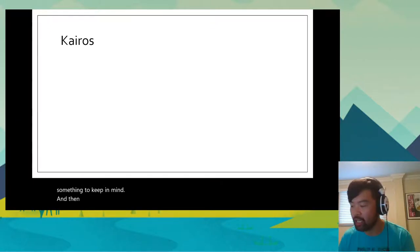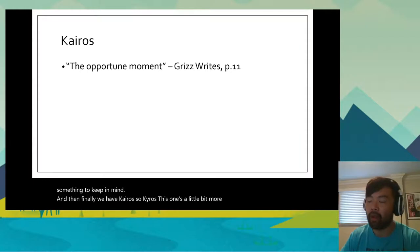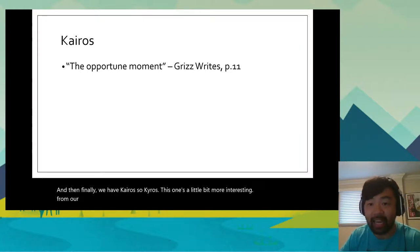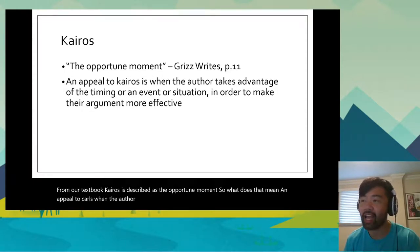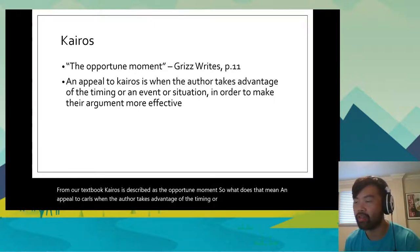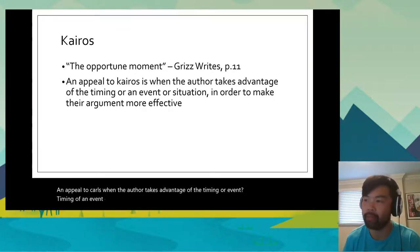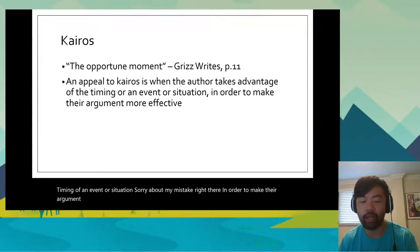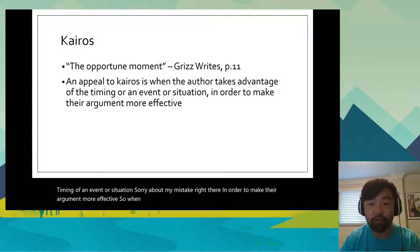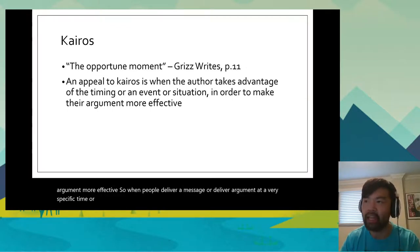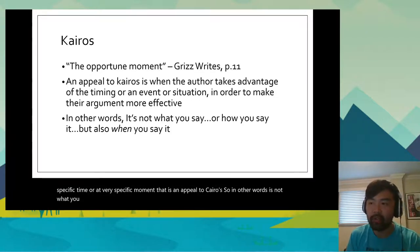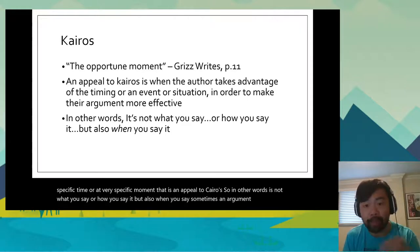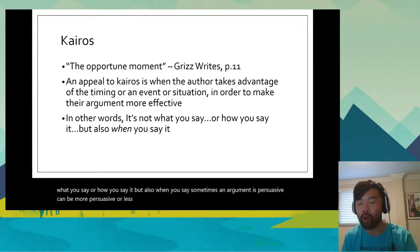And then finally we have kairos. This one's a little more interesting. From our textbook, kairos is described as the opportune moment. An appeal to kairos is when the author takes advantage of the timing of an event or situation in order to make their argument more effective. When people deliver a message at a very specific moment, that is an appeal to kairos. In other words, it's not just what you say or how you say it, but also when you say it — an argument can be more or less persuasive depending on when it is made.